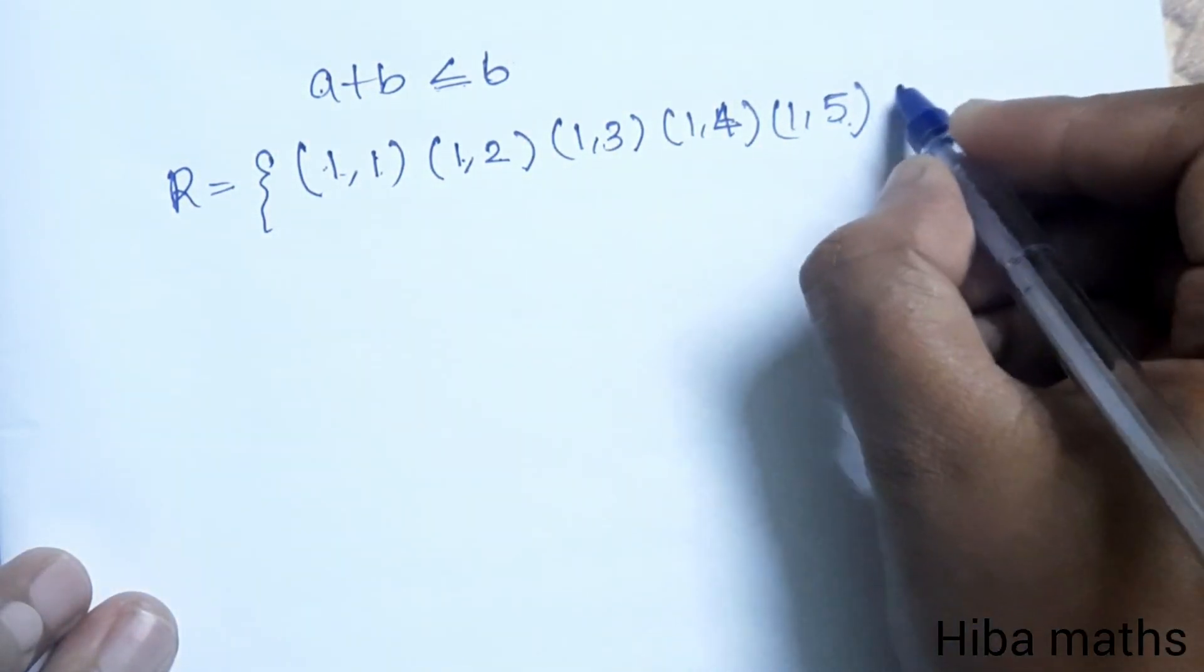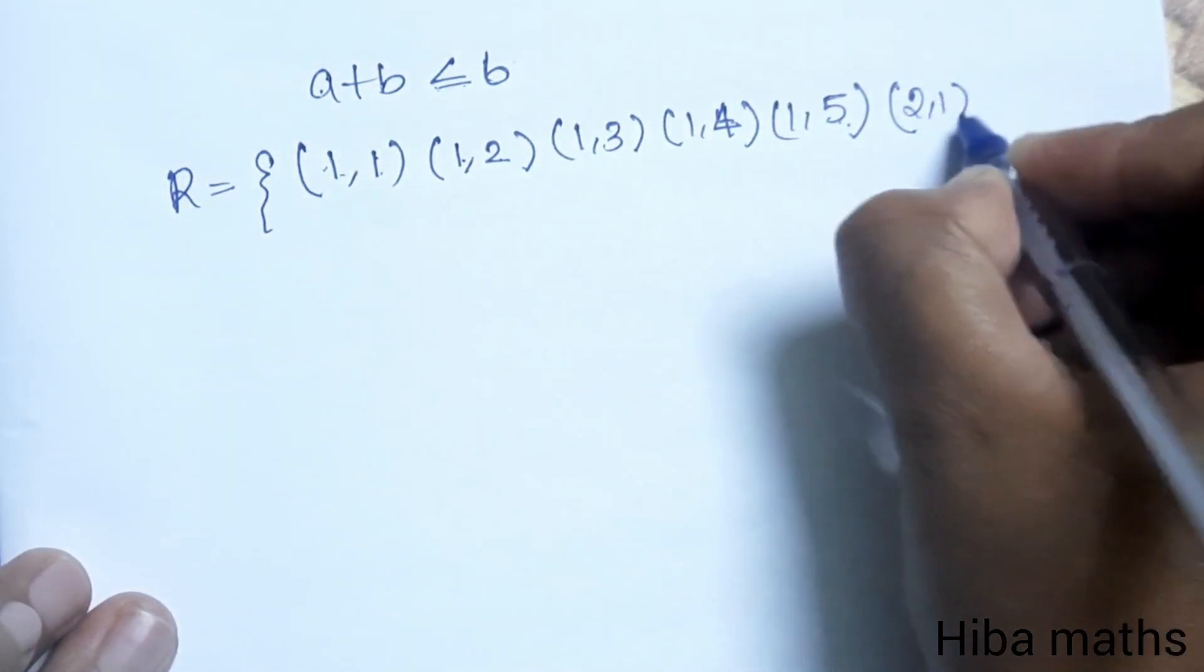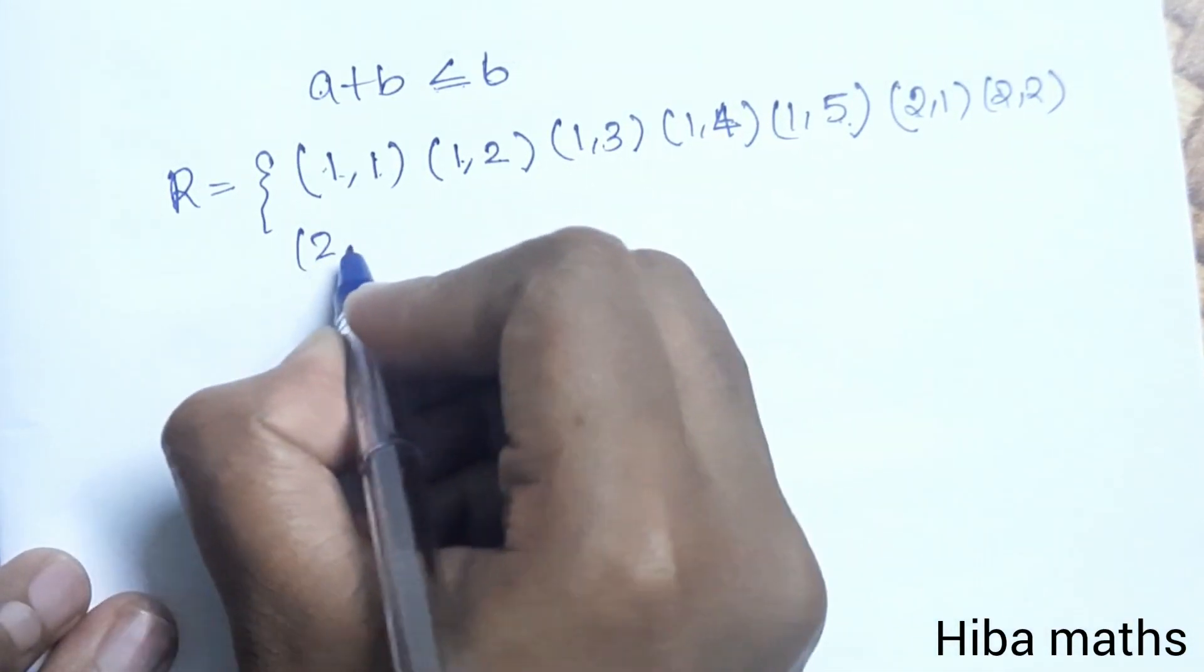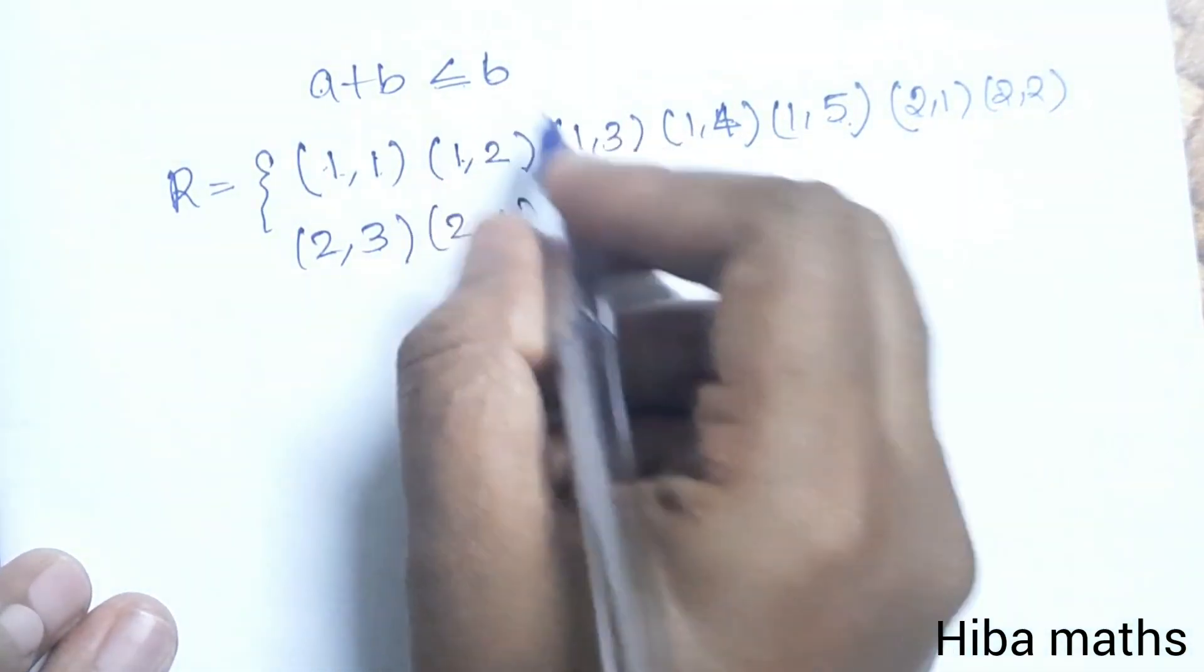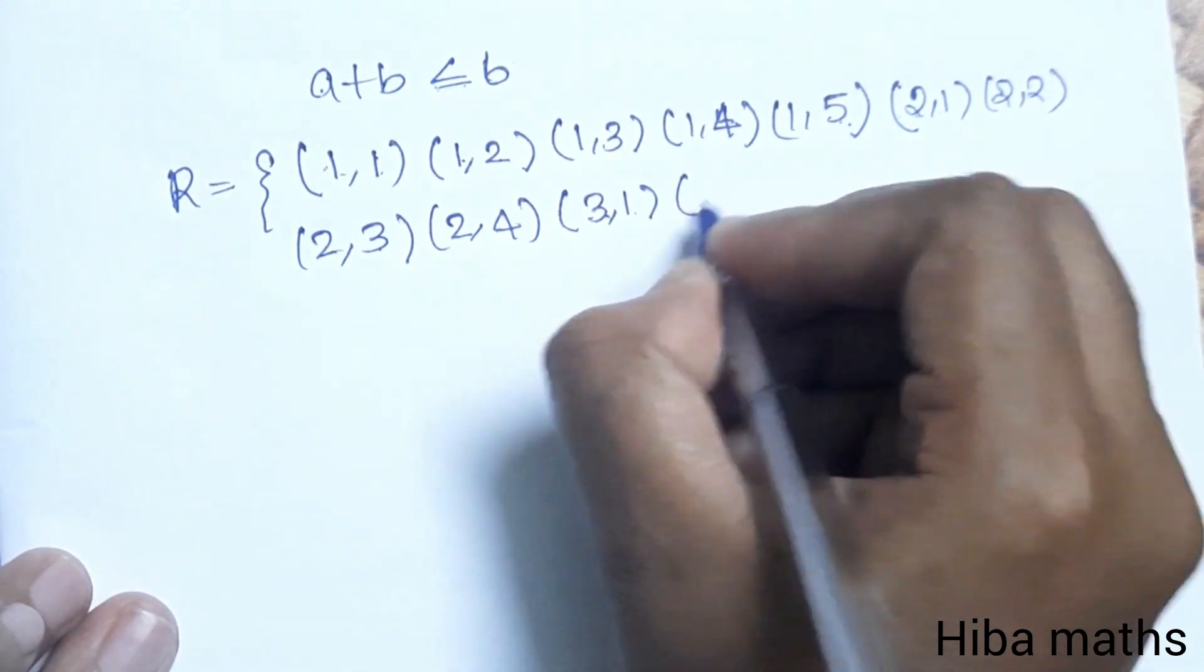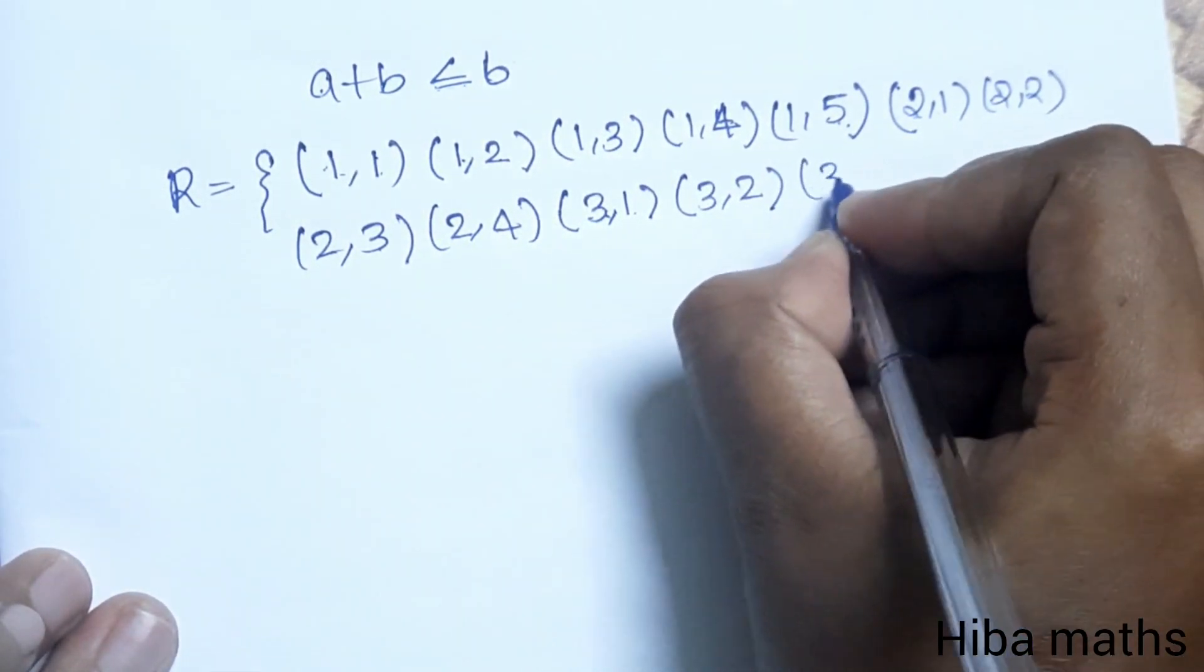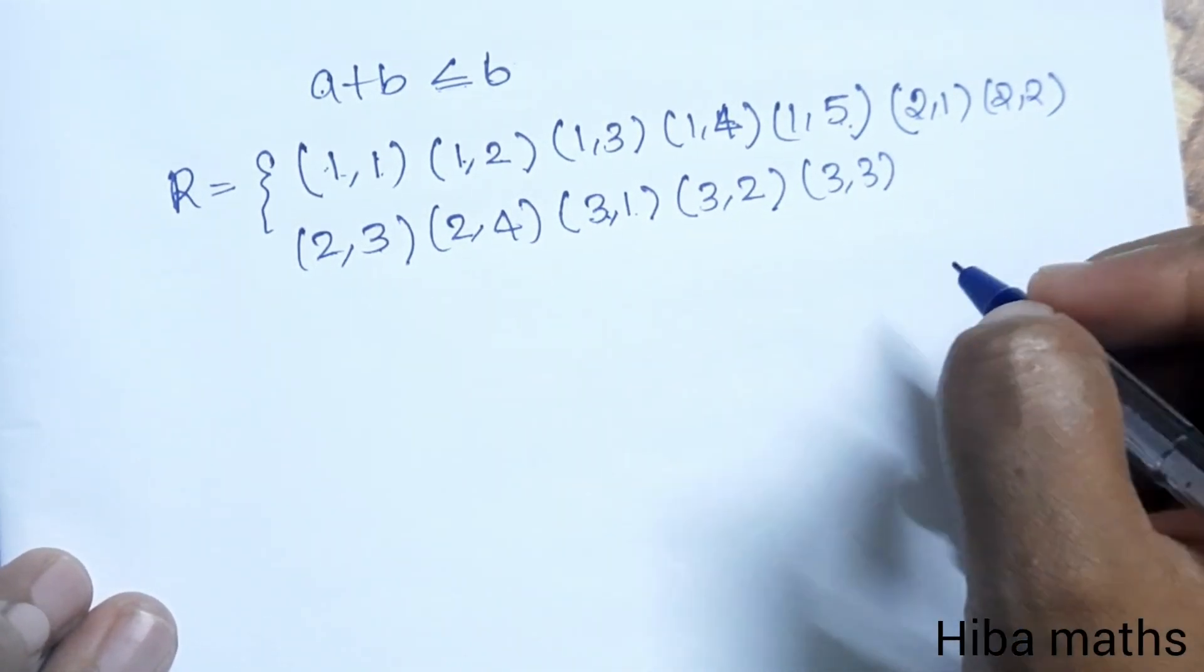(1,6) would be 7, which doesn't satisfy the condition. Next, (2,1) is possible since 2+1=3. (2,2) gives 4, (2,3) gives 5, (2,4) gives 6. Then (3,1) gives 4, (3,2) gives 5, (3,3) gives 6.